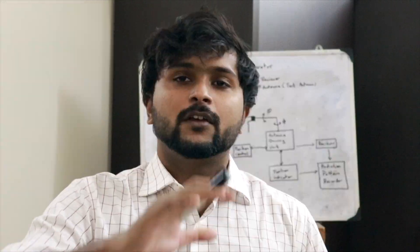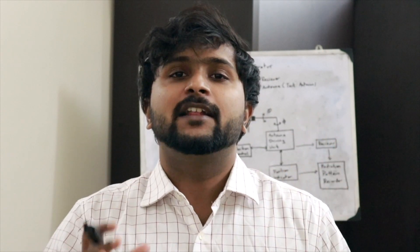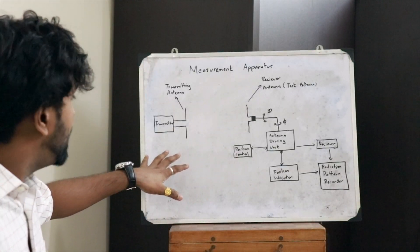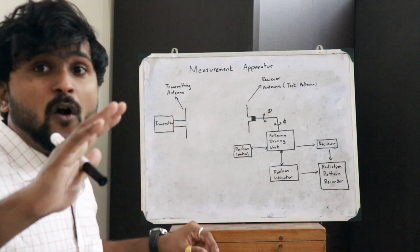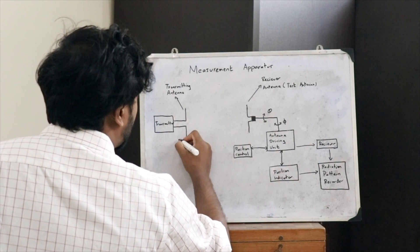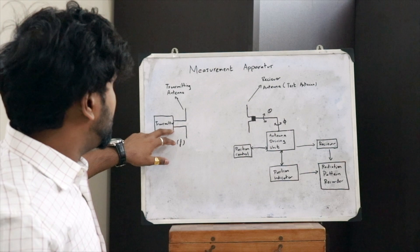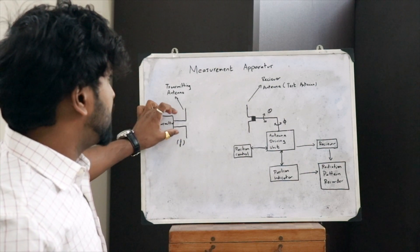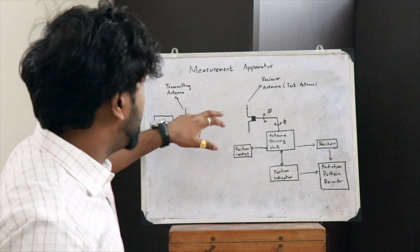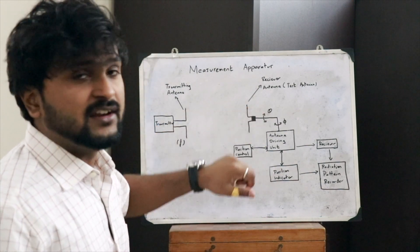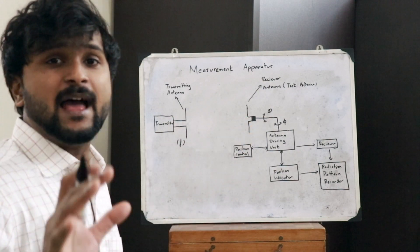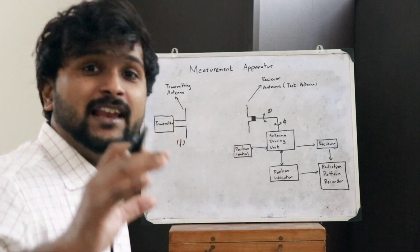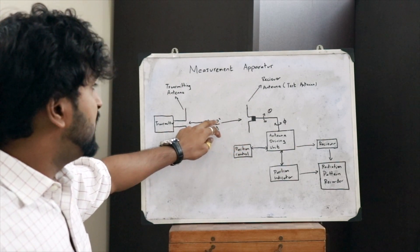That is how we measure the radiation pattern. Now let us look at the measurement apparatus required. A transmitter transmits signals through a transmitting antenna at a constant frequency f. The receiver antenna must be placed in the far field region, so the minimum distance from the transmitter must be greater than 2D squared over lambda.